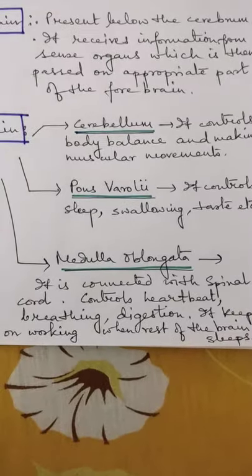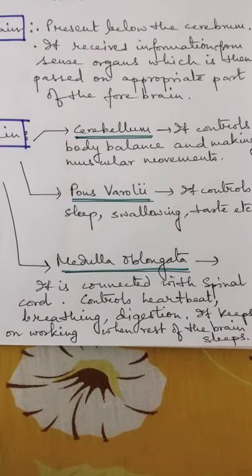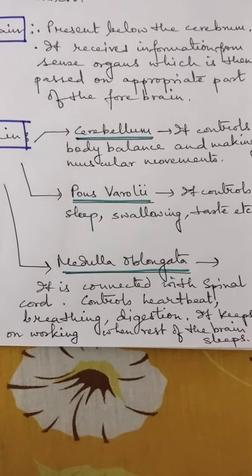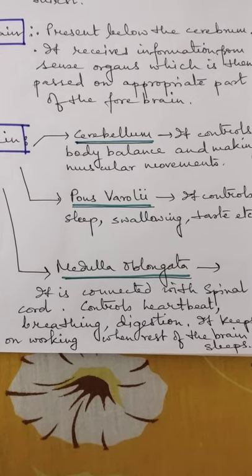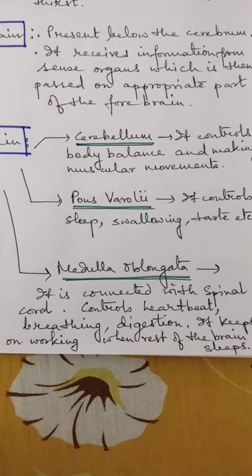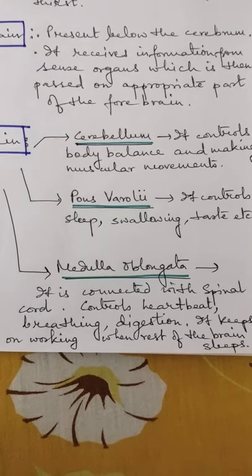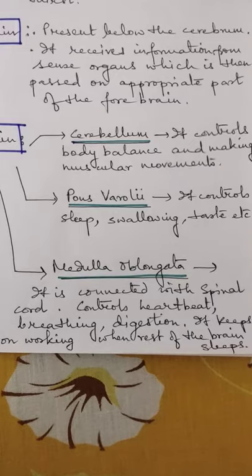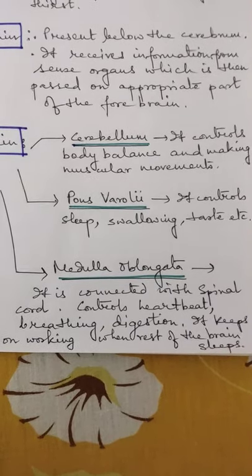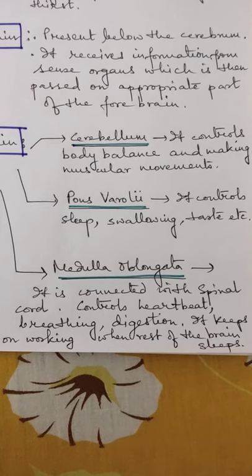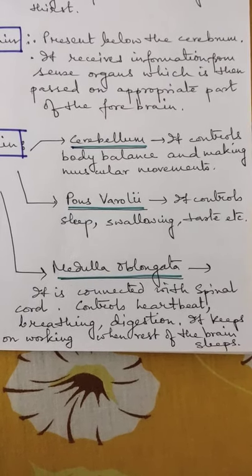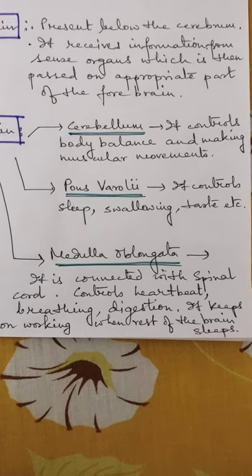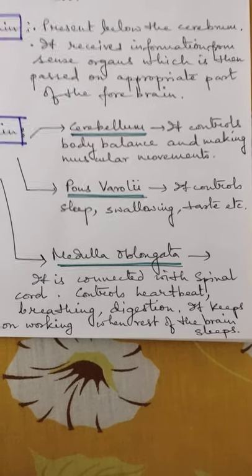Medulla oblongata, as the name suggests, is very important. It is connected with spinal cord in the neck region. It controls heartbeat, breathing, and digestion. You can understand that if it stops working we will die. It keeps on working when rest of the brain sleeps. Our brain needs to sleep and rest, but medulla is like our heart - it never gets tired. It keeps on working when rest of the brain sleeps.